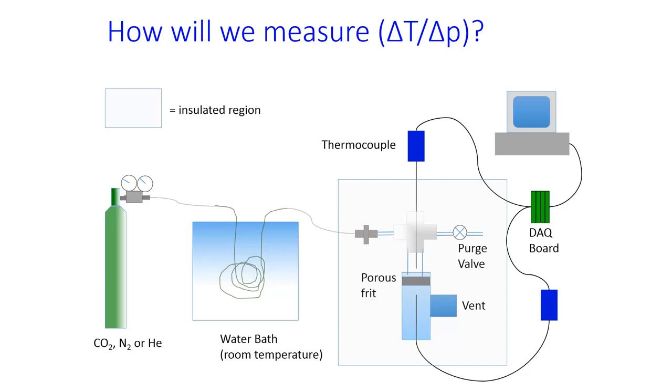So we're going to measure delta T over delta P using the apparatus shown here. It involves two thermocouples to measure the temperature, a tank of gas that's going to be sent at high pressure onto one side of a porous frit and then expanded through that frit to atmospheric pressure on the other side of the vent. The data from the thermocouples is going to be collected by a data acquisition board and then by a MATLAB program.